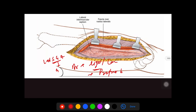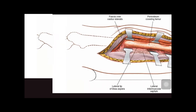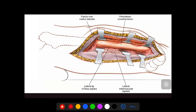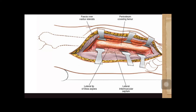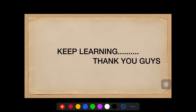If we talk about the extensile approach, we can safely expose the whole length of the femur through this approach. However, the anterior proximal two-thirds of the femur will be difficult, but there is no danger. Keep learning. Thank you guys.